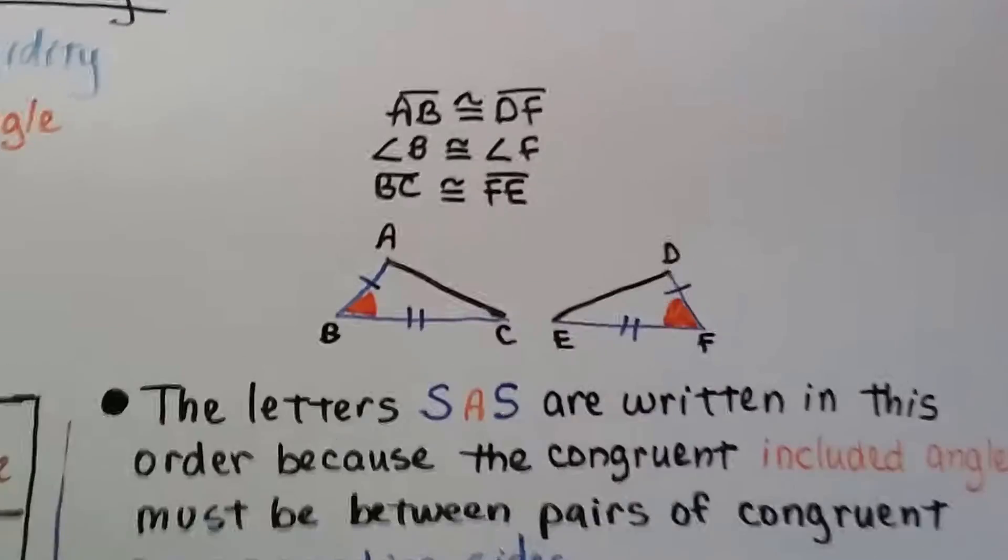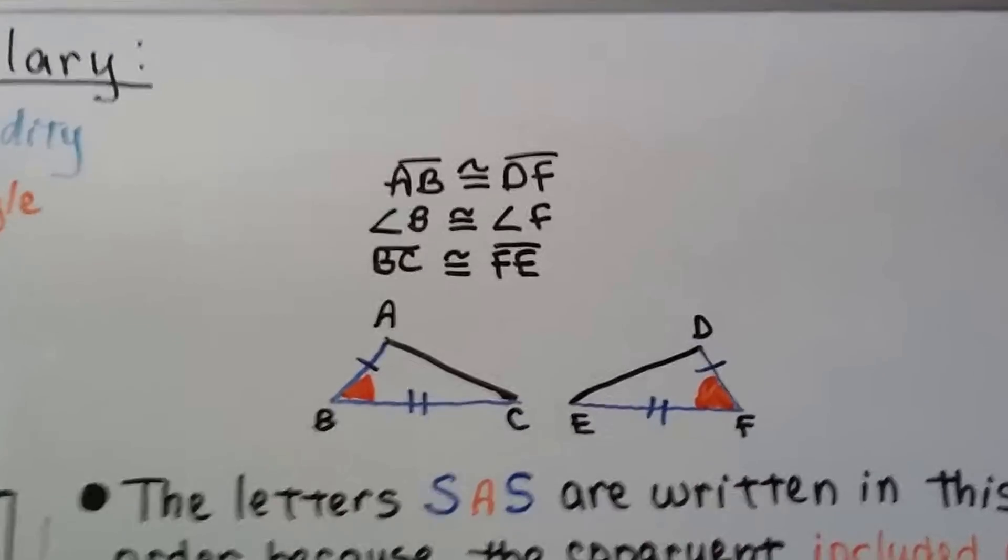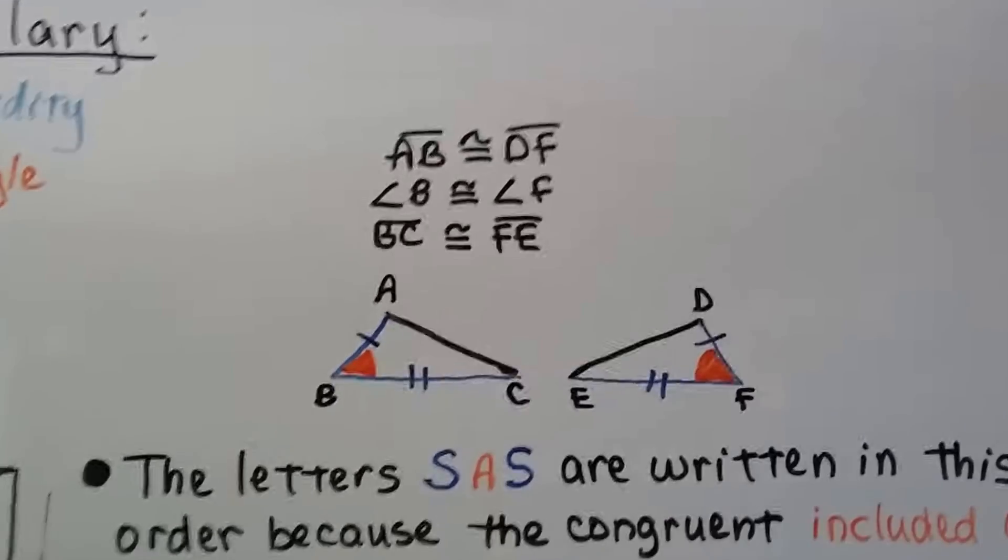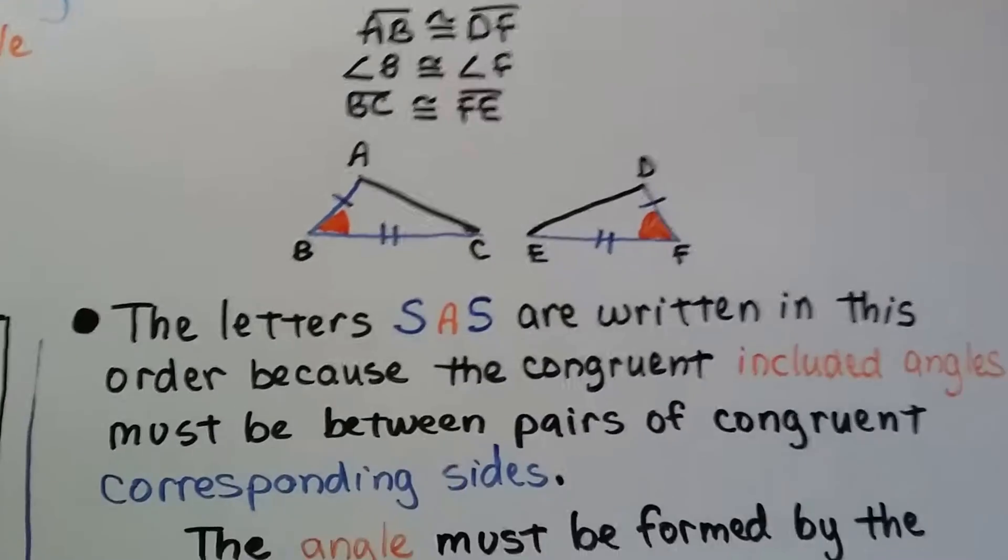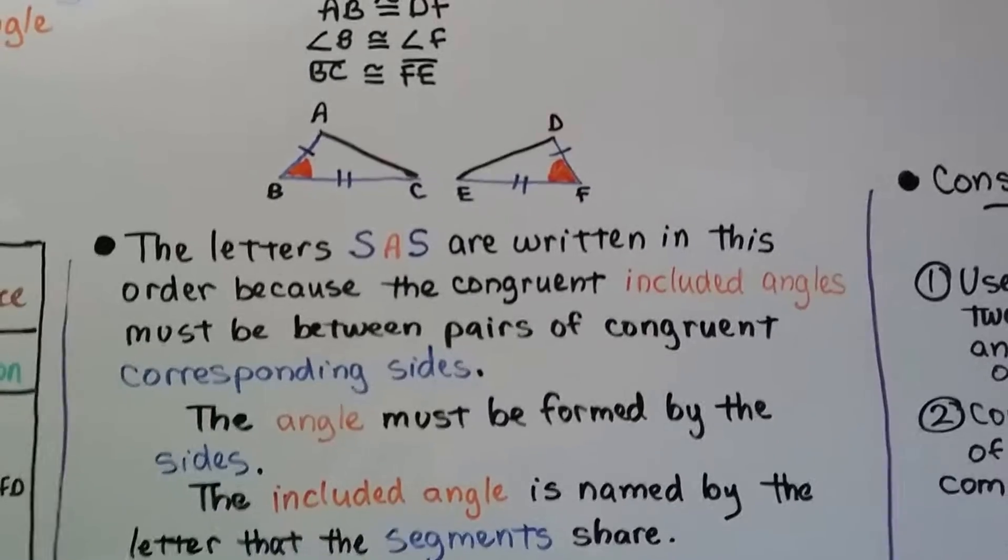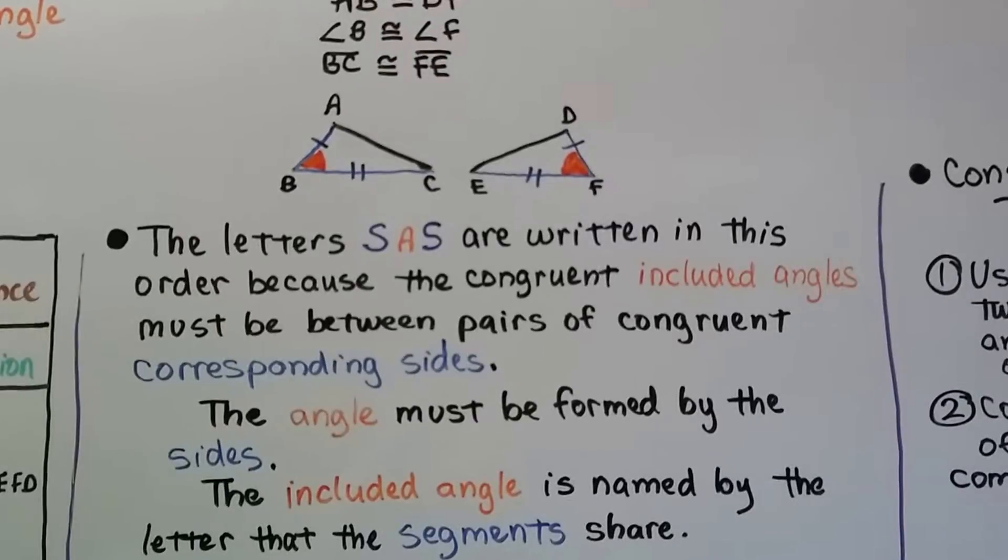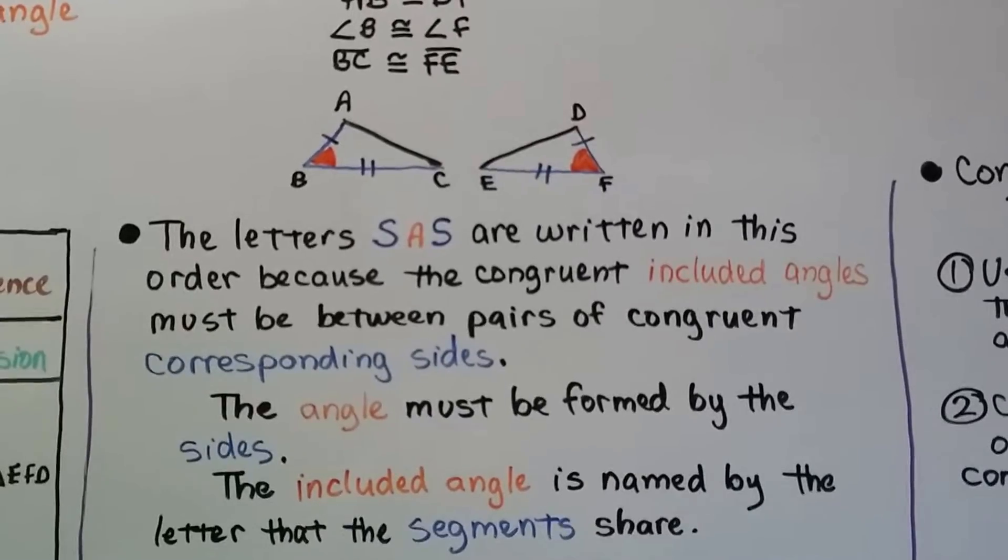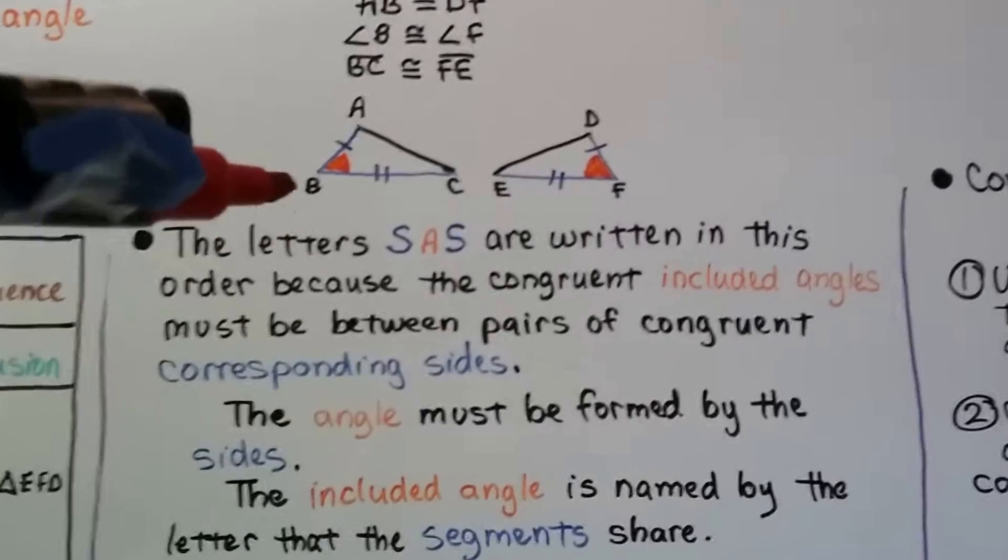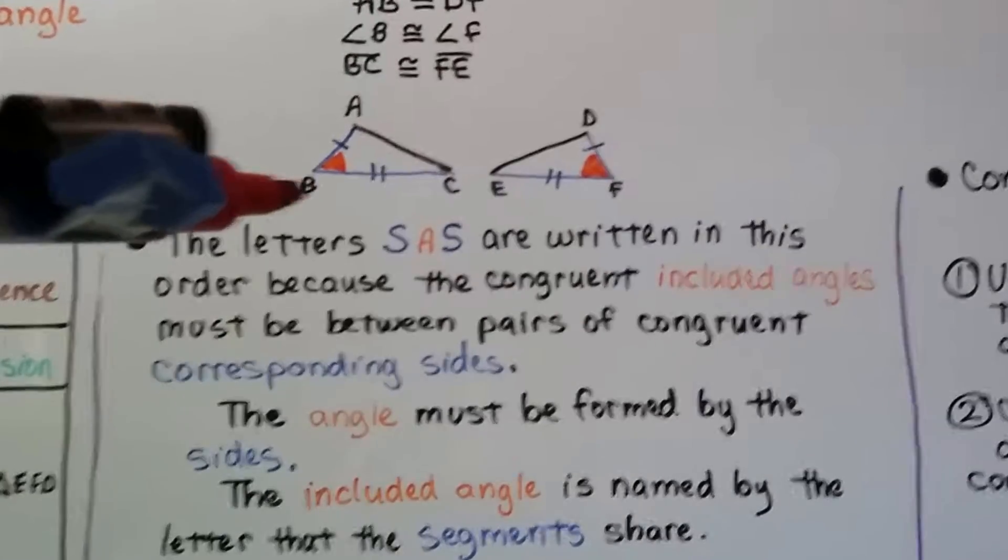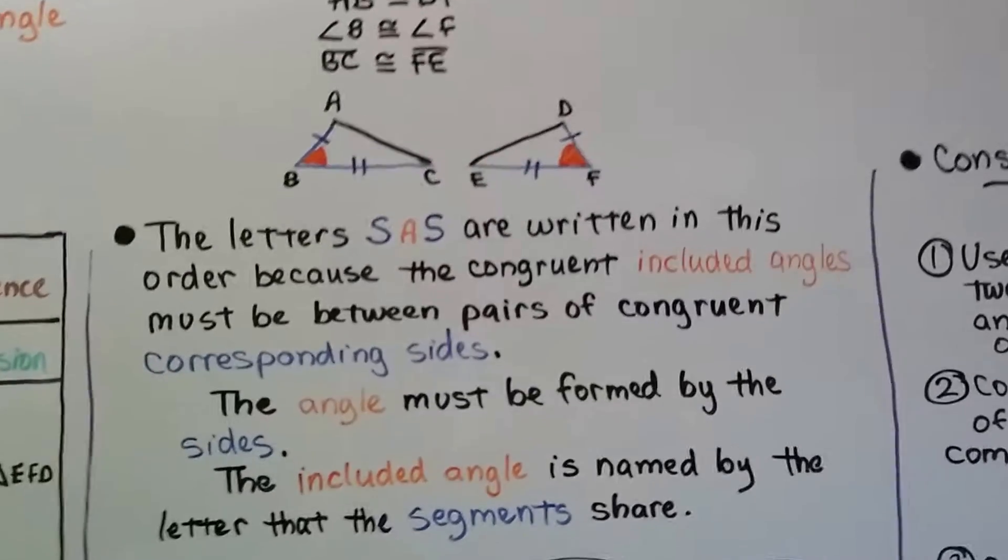Take a look at these two triangles. Segment AB is congruent to segment DF - we can see the one congruent line. Angle B is congruent to angle F, and segment BC is congruent to segment FE. The letters SAS are written in this order because the congruent included angles must be between pairs of congruent corresponding sides. The angle must be formed by the sides. The included angle is named by the letter that the segments share.